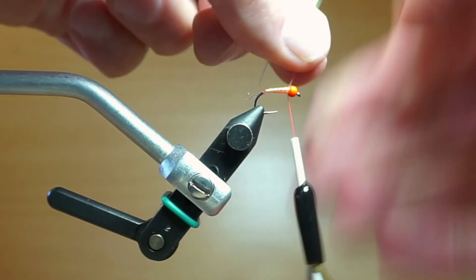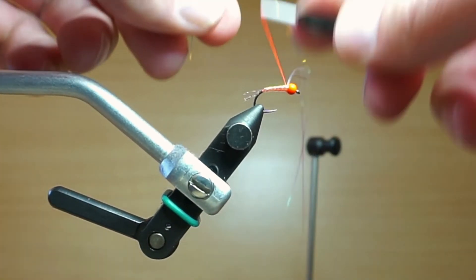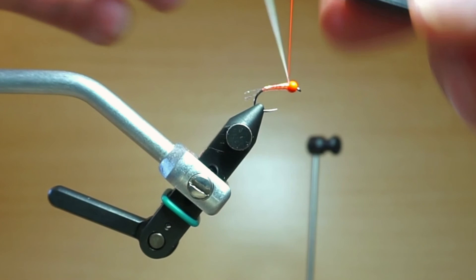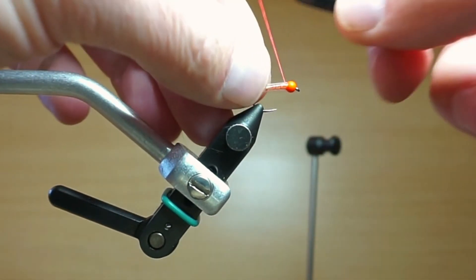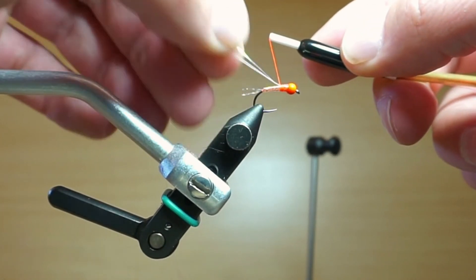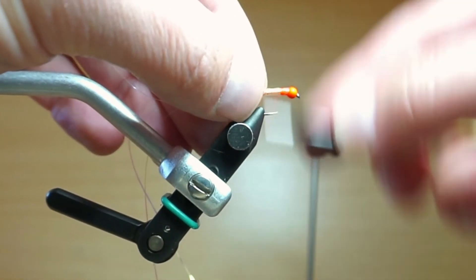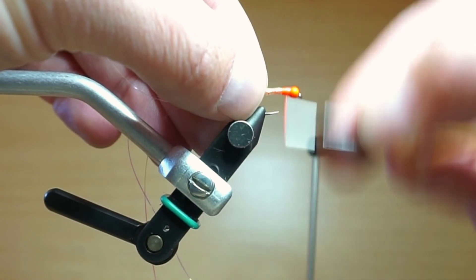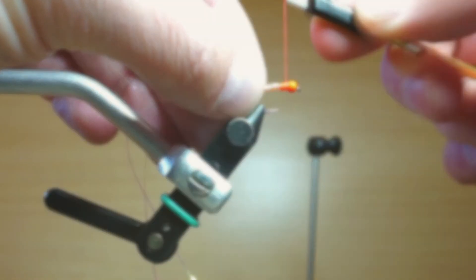Go ahead and get that nice and secure. But do not cut the flashabu off. We're going to use that for our wing case here in a second. So go ahead and just pin it back down and create a little landing spot for our next material. Let's say about a third of the hook length.